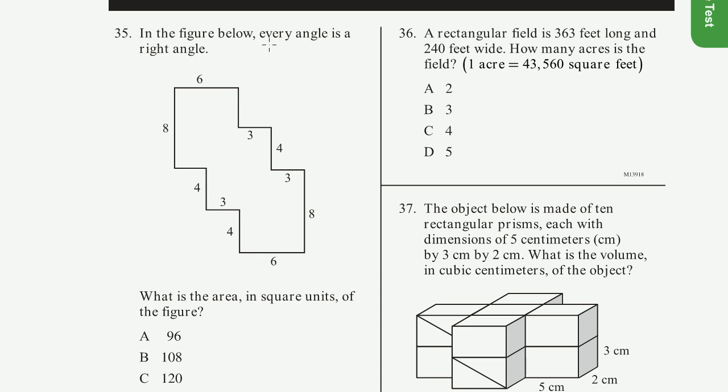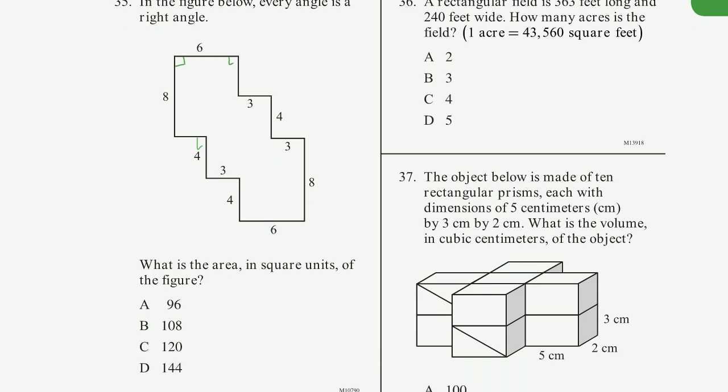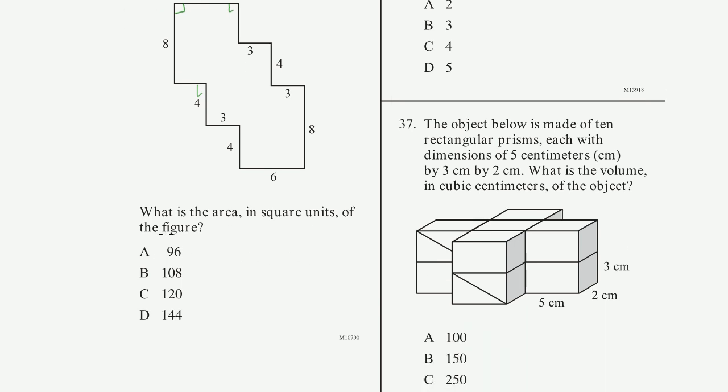Problem 35. In the figure below, every angle is a right angle. So they're just saying that's a right angle, that's a right angle, these are all right angles. I think you get the idea. What is the area in square units of the figure? So how can we figure this out? We could just divide this up into a bunch of rectangles and figure out their respective areas.